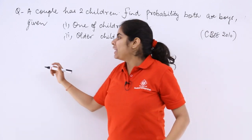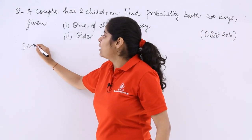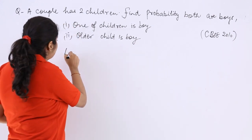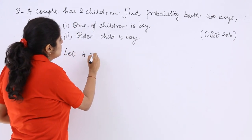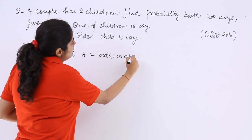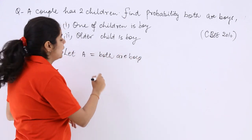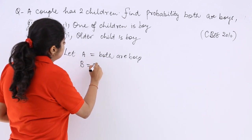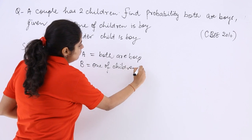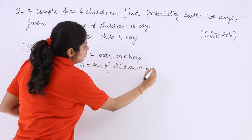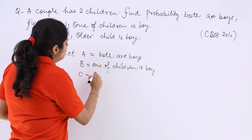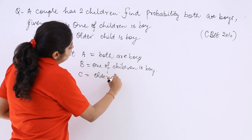We can name different events to make the solution easier. Let A be the event that both are boys. Let B be the event that one of the children is a boy, which will help us in the first part. Then let C be the event that the older child is a boy.